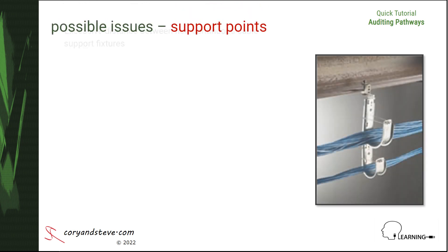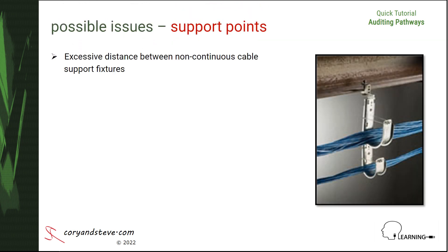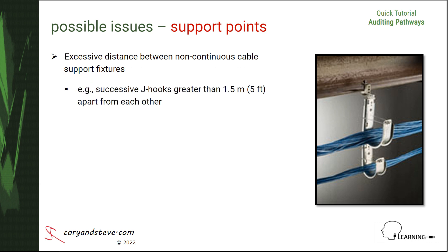The second issue that can affect performance is excessive distance between non-continuous support points, which places additional stress on the cable jackets at the edges of the support fixture. The auditor should confirm that the maximum allowable distance between successive non-continuous pathways such as J-hooks is 1.5 meters or 5 feet.